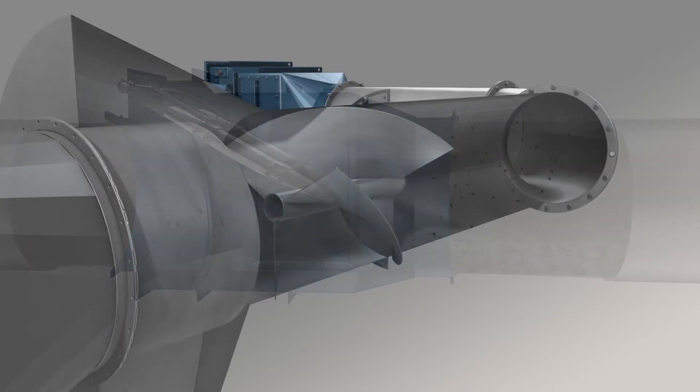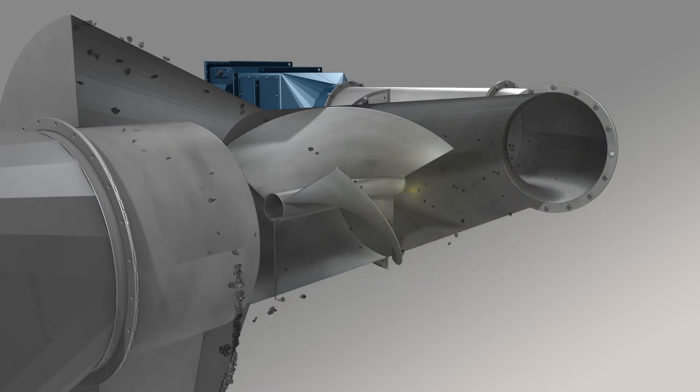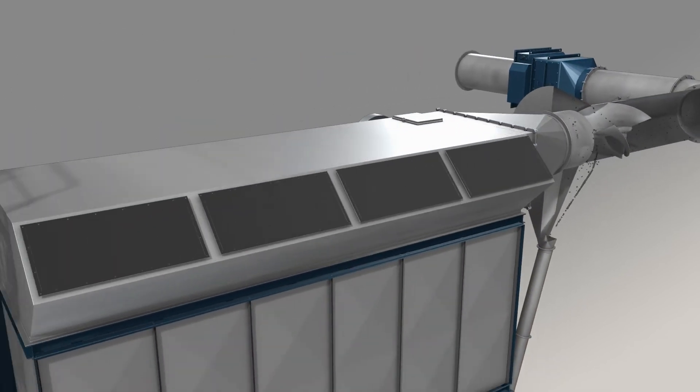A spin pre-separator removes coarse particles and sparks. If a spark reaches the filter, a dust explosion in the collector may occur.